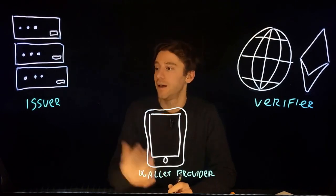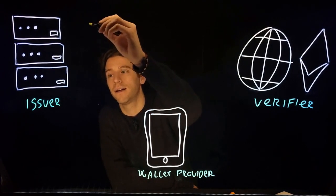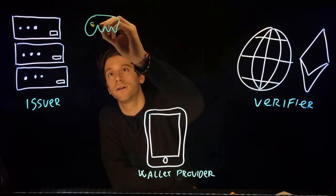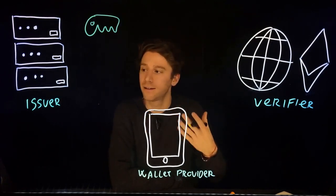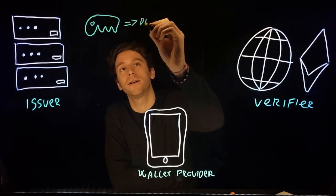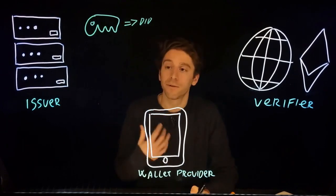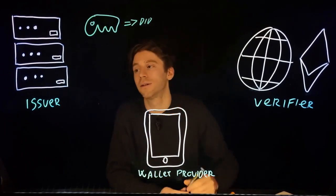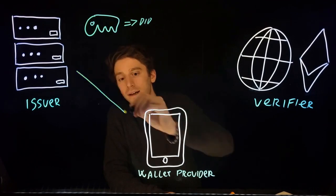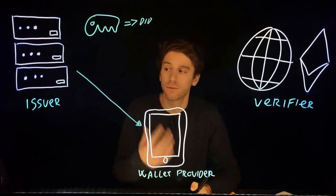The main APIs available through the Issuer Node include one that allows you to create keys for the issuer, which is basically the way the issuer controls their identity, and to extract a public identifier called the DID from this private key. Furthermore, one of the main functionalities of the Issuer Node is to create credentials, issue those credentials, and share them with users in their wallet.